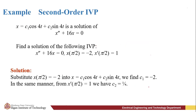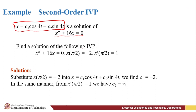Now, another example — a second-order initial value problem. We are given the general solution x = c₁cos(4t) + c₂sin(4t), which is a solution for the differential equation x'' + 16x = 0. We are tasked to find a particular solution. Since it is second-order, we need two initial conditions to find the values of arbitrary constants c₁ and c₂.